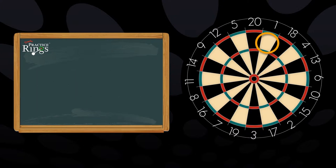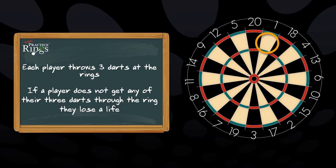Each player will throw a total of three darts at the ring. If a player does not get any of their three darts through the ring, they will lose a life.